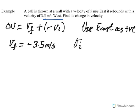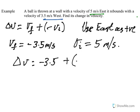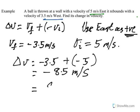And our initial, which is the 5 metres per second east. East is in the positive direction, so that's 5 metres per second. So our change in velocity is the final, minus 3.5, plus the negative of the initial, so negative 5, which is minus 8.5 metres per second. Because negative is west, if east is positive, negative is west. So our change in velocity is 8.5 metres per second west.